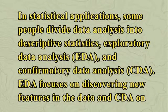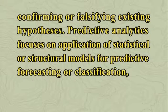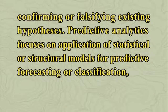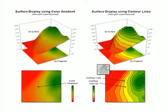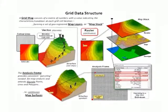Business intelligence covers data analysis that relies heavily on aggregation, focusing on business analysis information. In statistical applications, some people divide data analysis into descriptive statistics, exploratory data analysis (EDA) and confirmatory data analysis (CDA). EDA focuses on discovering new features in the data and CDA on confirming or falsifying existing hypotheses. Predictive analytics focuses on application of statistical or structural models for predictive forecasting or classification, while text analytics applies statistical, linguistic and structural techniques to extract and classify information from textual sources — a species of unstructured data. Data integration is a precursor to data analysis, and data analysis is closely linked to data visualization and data dissemination.